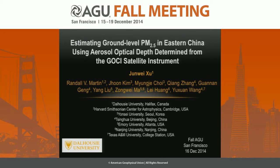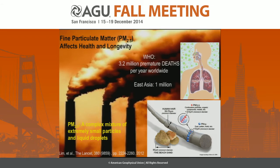We'll start with a brief introduction to the background. Fine particulate matter, or PM2.5, refers to particles in the atmosphere with diameter less than 2.5 microns. They're so small that when we breathe, they can follow the streamline of breath, go all the way deep into the lungs, and cause a variety of health problems, including cardiovascular diseases or even mortality.